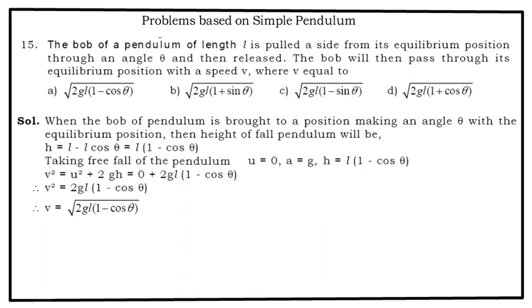Taking free fall of the pendulum, U = 0, A = g, and H = L(1 - cos θ). We know that v² = u² + 2gH. Now put H = L(1 - cos θ). So obviously v = √(2gL(1 - cos θ)). So option A is the correct answer.